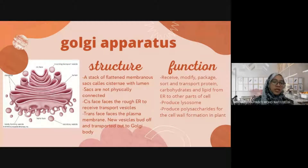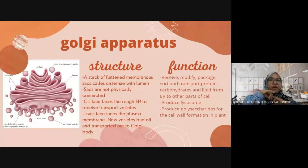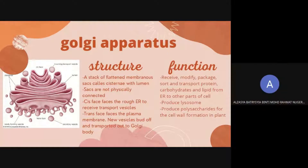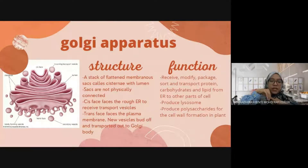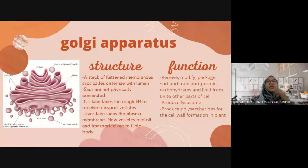The Golgi apparatus will receive from the ER — from the cis space — and process materials to other parts of the cell. It will receive, then modify, package, sort, and transport. The teacher uses a Shopee seller analogy: just like a seller on Shopee, you receive the purchase, modify the item, package it, sort it, and then post or transport it. So there are five functions for the first point.